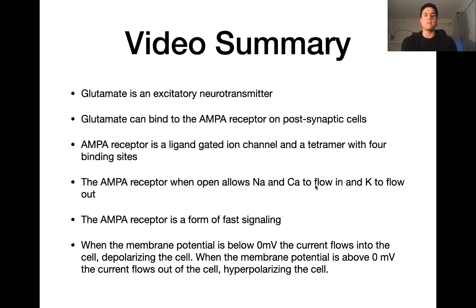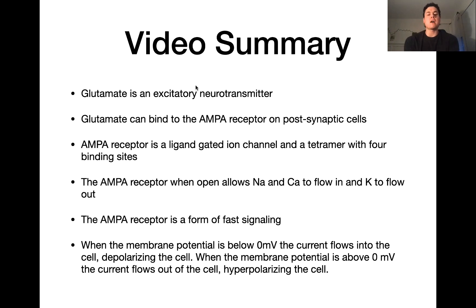Let's summarize. Glutamate is an excitatory neurotransmitter because the resting potential of many cells is negative, which is below the reversal potential of zero millivolts for the AMPA receptor. When the AMPA receptor is open below this reversal potential, it passes an inward current causing depolarization — therefore it is excitatory. Glutamate can bind to the AMPA receptor at four different binding sites. When the channel is open, sodium and calcium flow in and potassium flows out. The AMPA receptor is a form of fast signaling because it is a ligand-gated ion channel. Below the reversal potential, current flows in, depolarizing the cell; above it, current flows out, hyperpolarizing the cell.